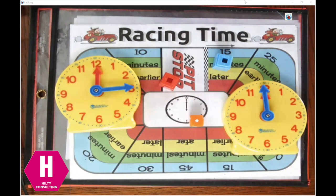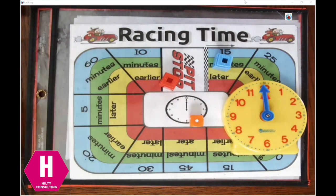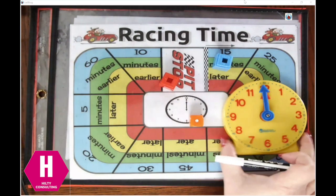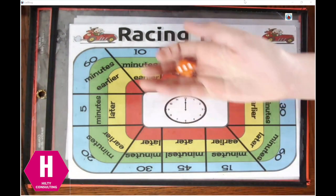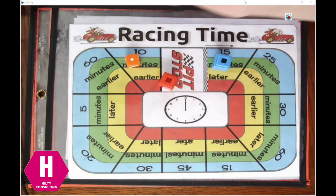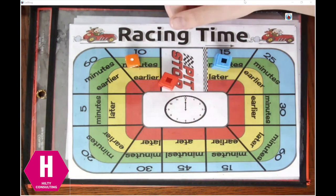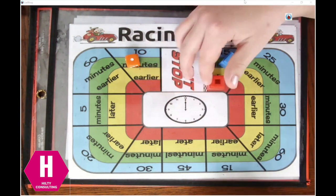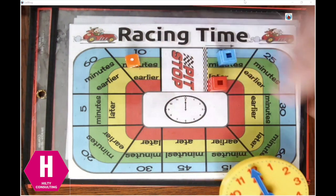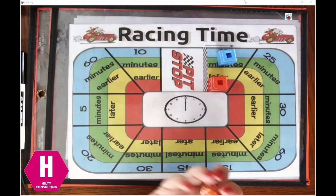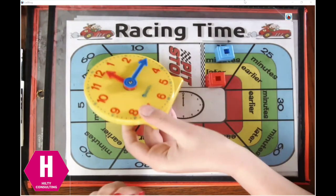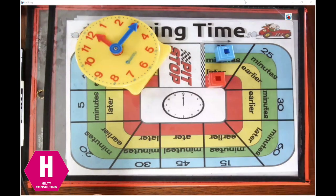So Brett is now going to roll. He rolled a one as well, so he's going to go to that first space. He also has to make his clock say 12:15, just like I did. He would record that on his recording sheet.